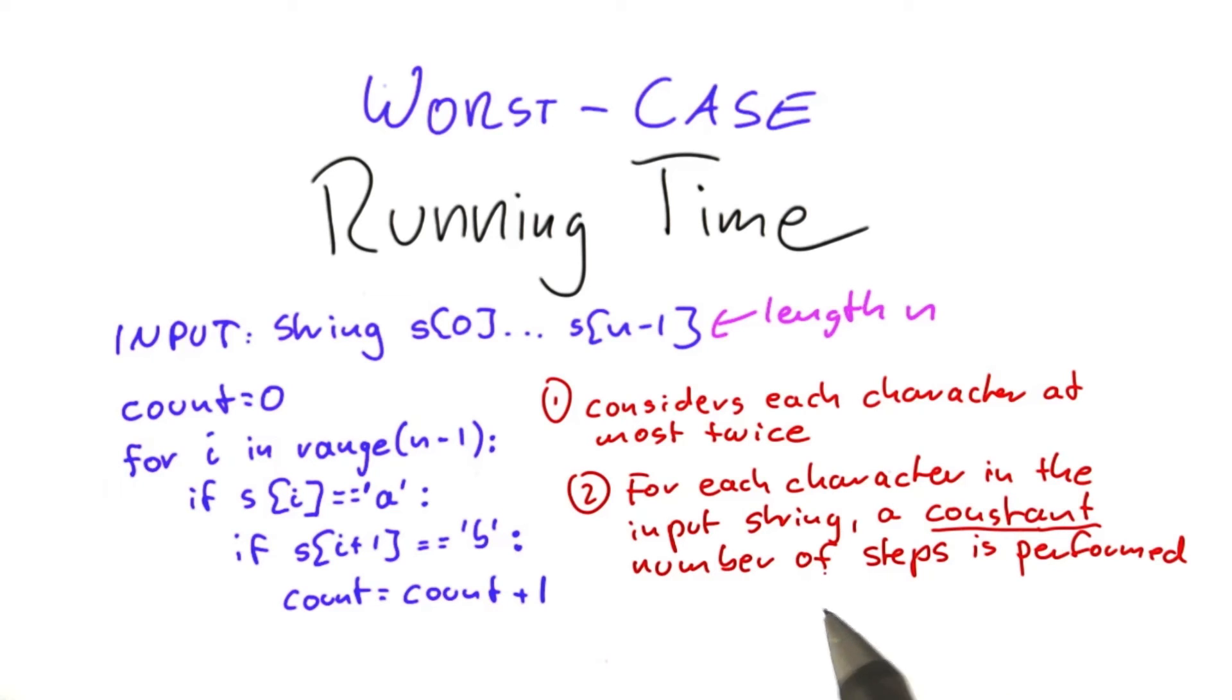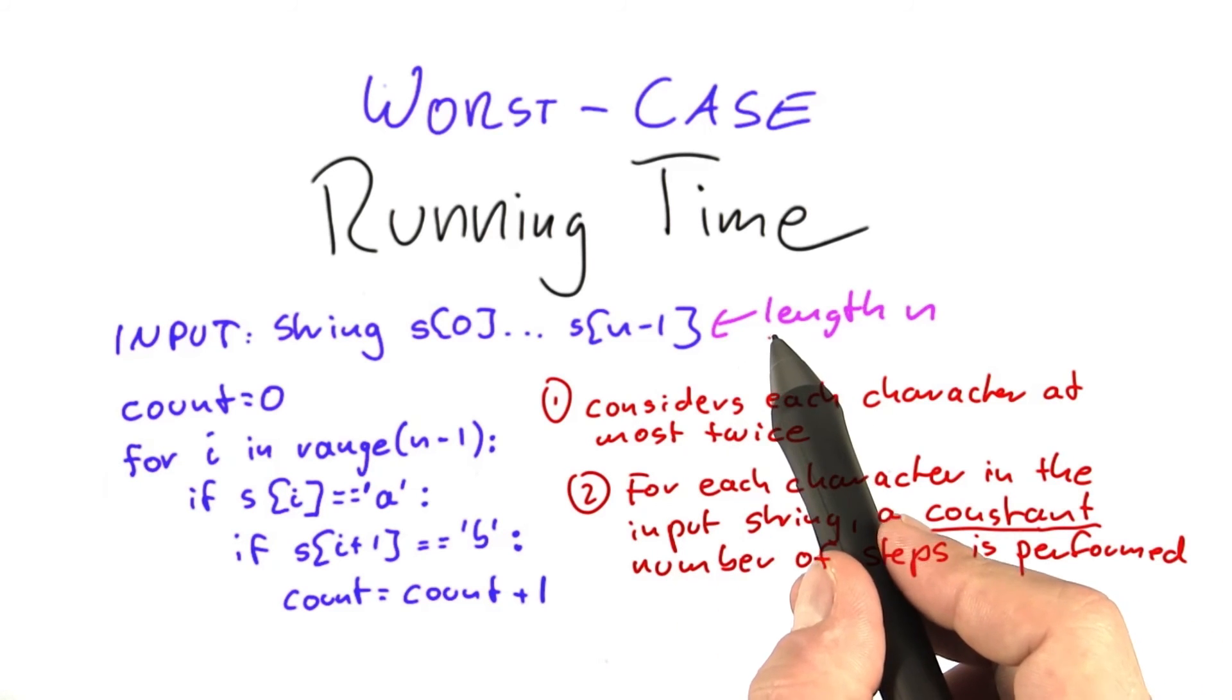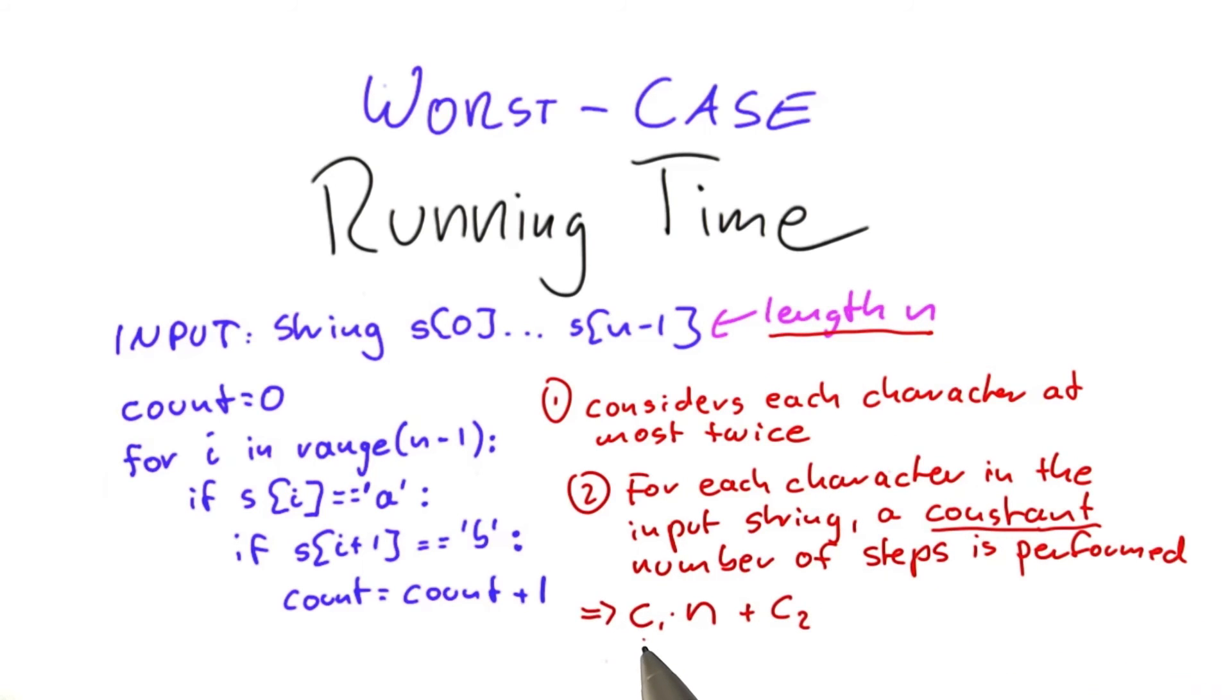So overall, this means that if you have an input of length n, the algorithm will perform a number of steps that is some constant times n plus some constant for all the rest of the operations. But using big O notation, we already know that this is O of n.